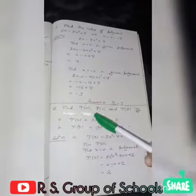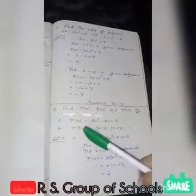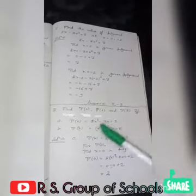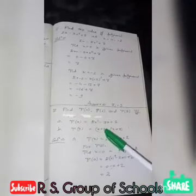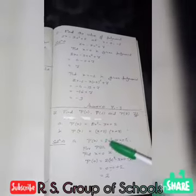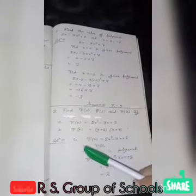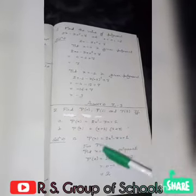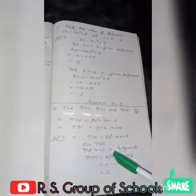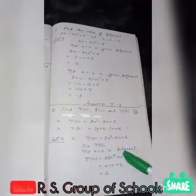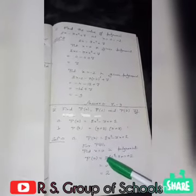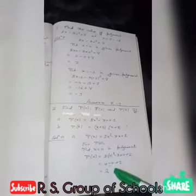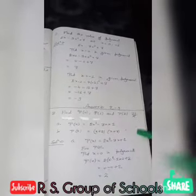Find p(0), p(1), and p(2) if p(x) equals 2x square minus 3x plus 2, and p(x) equals x plus 2 times x plus 3. First part: p(x) equals 2x square minus 3x plus 2. For p(0), put x equal to 0: p(0) equals 2 into 0 square minus 3 into 0 plus 2. We have p(0) equal to 2.